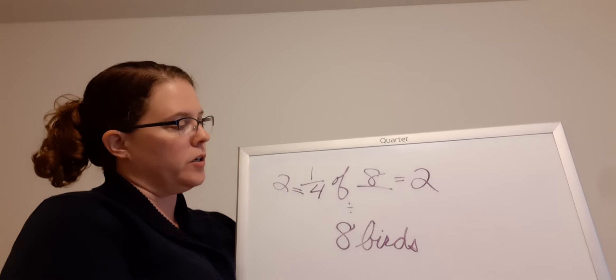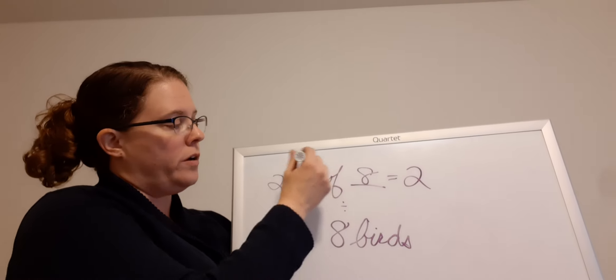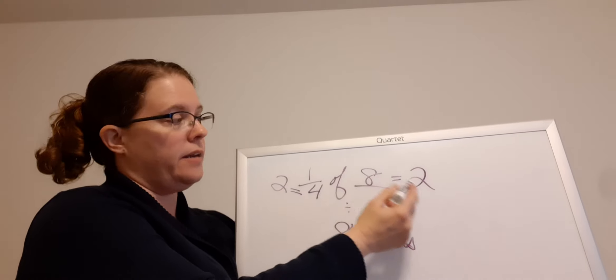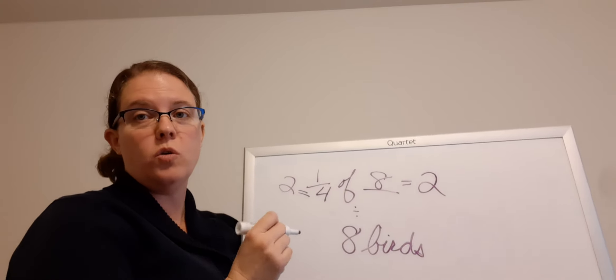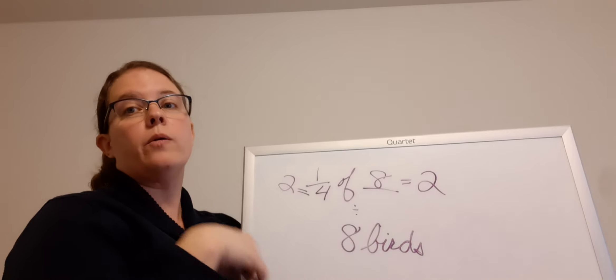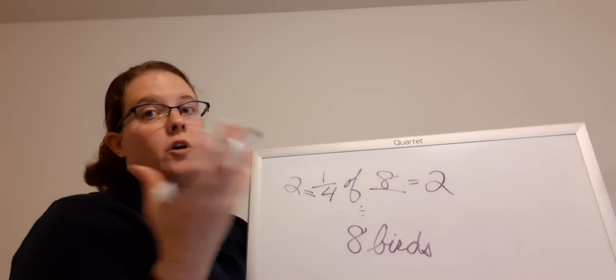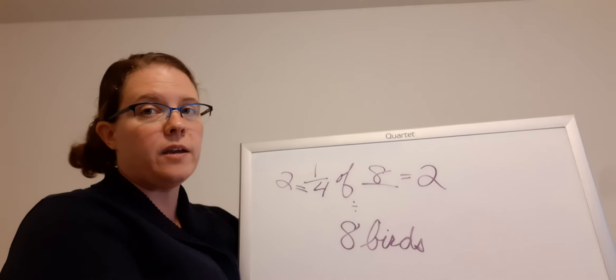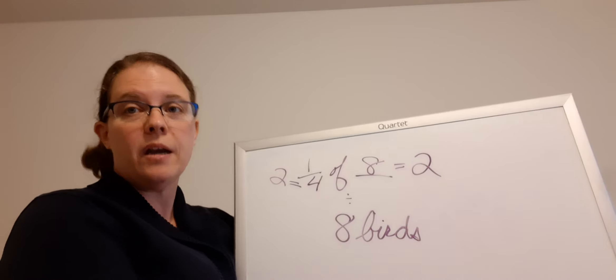So eight total birds. One fourth of the eight is two — two parakeets. The rest of her birds are other types of birds. We don't know what kind they are, but we know they're not parakeets.